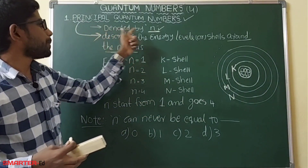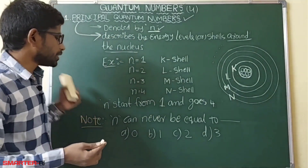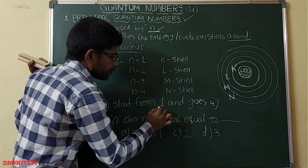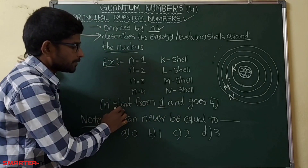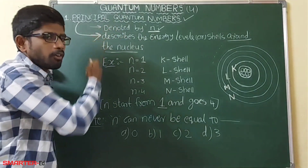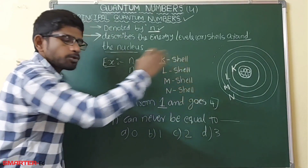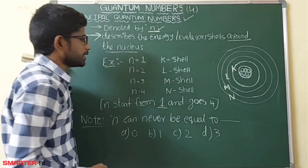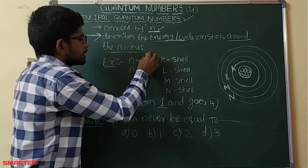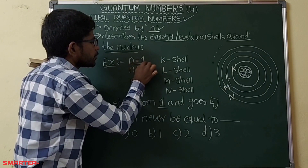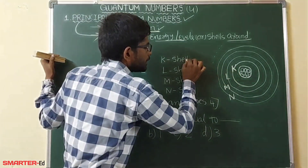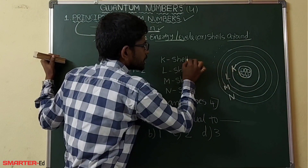The principal quantum number is denoted by small n. The value of n starts from 1. When n equals 1, that is the K shell.